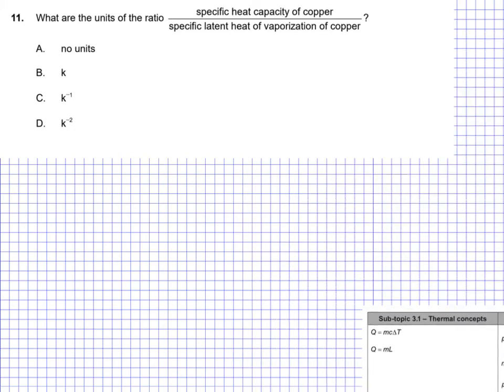I can scooch it right the way over because hopefully you can recall these formulas here. Q is mcΔT and Q is mL. And so the top formula here is our specific heat capacity and then our latent heat denoted by, of course, the L. This is our formula for this.